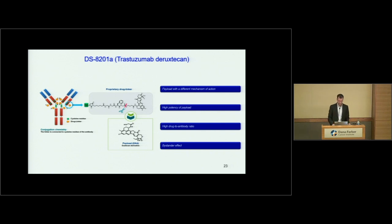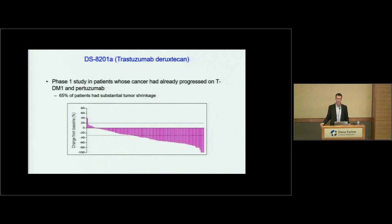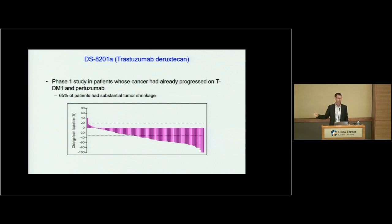The proof is in the pudding — this is a waterfall plot where each bar represents a patient on the trial, and the line across the middle is no change in cancer. Any bar below means the cancer shrank, above means it grew. Over 90% of people's cancer shrank with this drug — and these were patients who had already been on a lot of treatment, including TDM1, pertuzumab, and trastuzumab. This was pretty unprecedented in terms of how uniformly the drug worked, and data from the next bigger trial looks very encouraging.